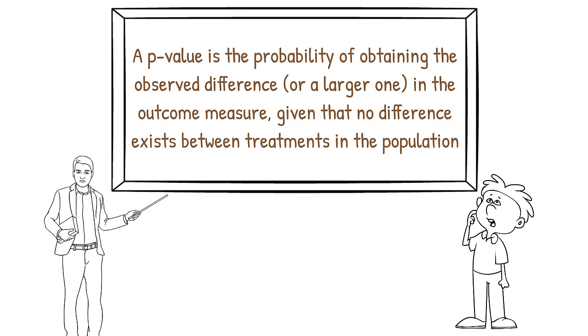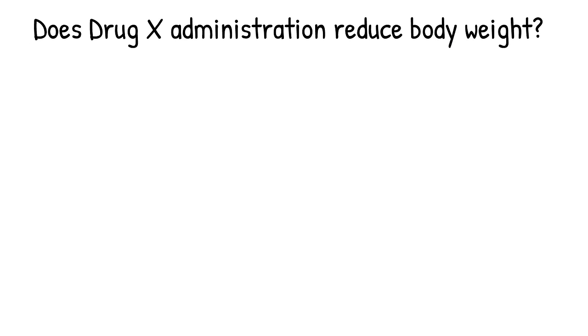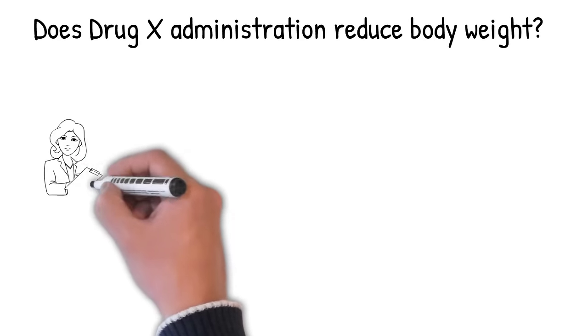So, the best way to explain what a p-value is, is to use an example. Let's say you want to perform an experiment to see if a new type of weight loss drug, drug X, causes people to lose weight.